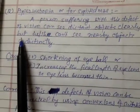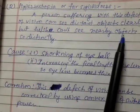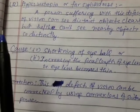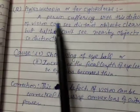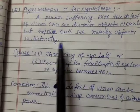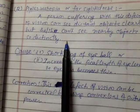but he or she cannot see nearby objects so distinctly. What is the possible reason that a person can see the distant objects clearly but cannot see nearby objects so distinctly?